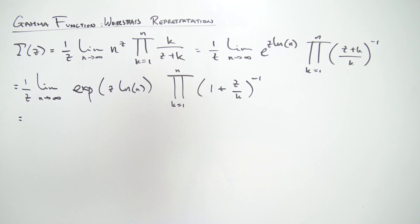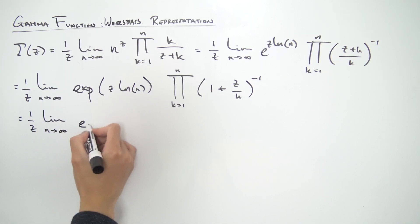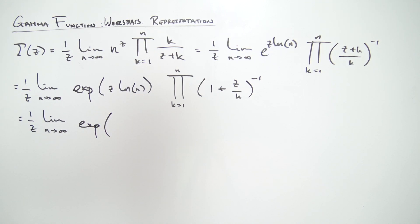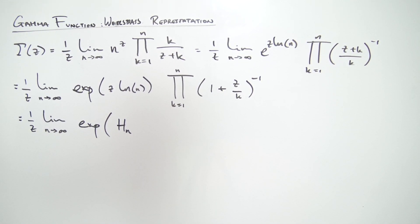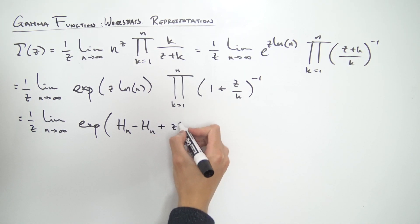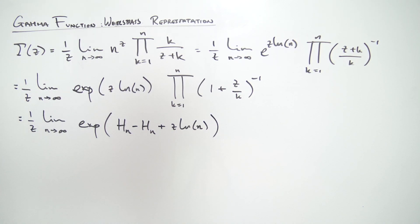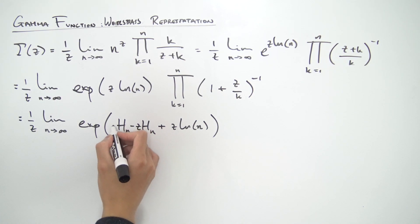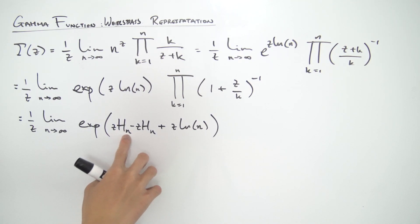So how do we do this? Let's write down everything: 1 over z, limit as n approaches infinity, exp of — now, to introduce the harmonic series, we can just add in z times the harmonic series and subtract it off straight away so we don't really change anything. We're adding z·H_n and subtracting z·H_n — the net result is zero. That way we can factor out z nicely with this natural log as well. And we still have the product running from k equals 1 to n of (1 plus z over k) to the minus one.